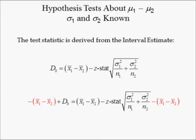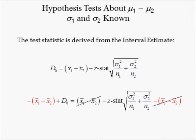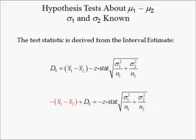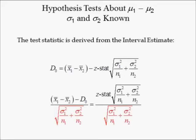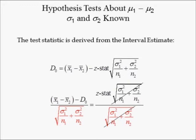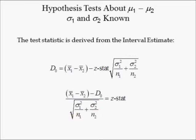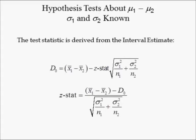Subtracting the difference in sample means from both sides eliminates it on the right-hand side. Multiplying both sides by negative 1 changes the sign in front of the difference in sample means to positive, and changes the sign in front of z-stat to negative. Dividing both sides by the standard error cancels out the standard error on the right side, leaving only z-stat. Hence, z-stat's numerator is the difference in sample means minus the hypothesized difference in the population means, while the denominator is the standard error of the difference in means.